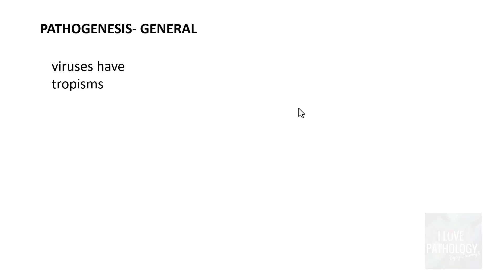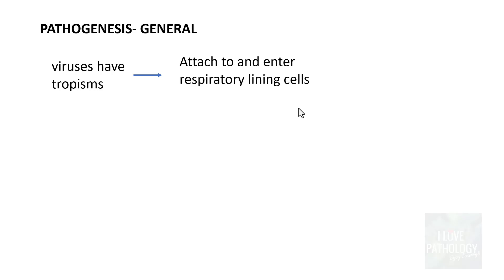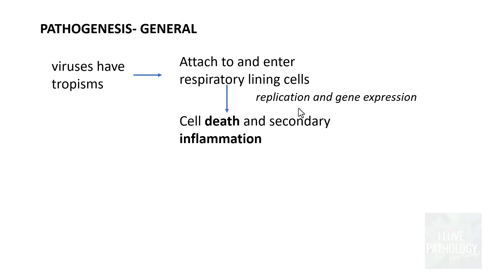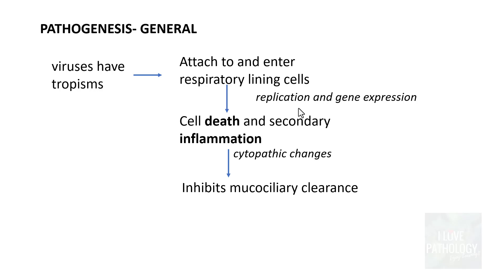What exactly do these viruses do? What is the pathogenesis? Viruses have proteins that attach to and then enter the respiratory lining cells, where there is replication and gene expression resulting in cell death as well as secondary inflammation. The respiratory lining epithelial cells die, inducing inflammation — these are essentially the cytopathic changes.